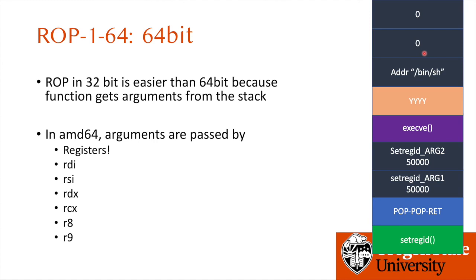There is a very little difference, and that's because of the argument-passing mechanism. In 32-bit, we can just use a number of pops and return to control and clear argument values because all function arguments are passed on the stack. But in AMD64 64-bit, we pass arguments via registers, not the stack. So to set the first and second arguments as 50000, we need to set the values of the RDI and RSI registers, not the stack.